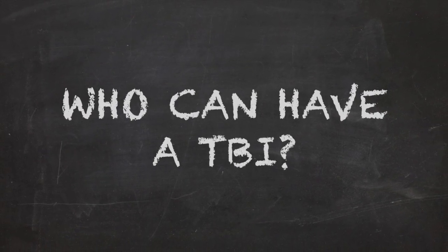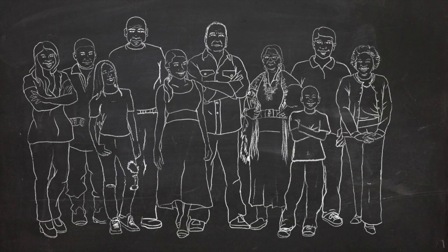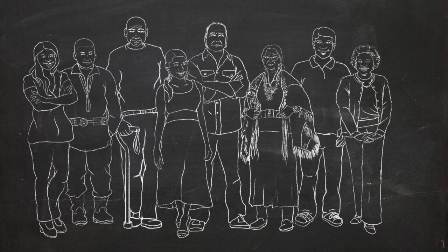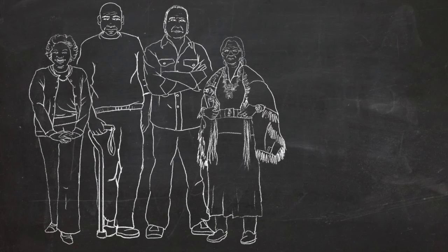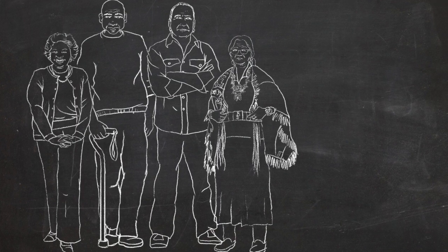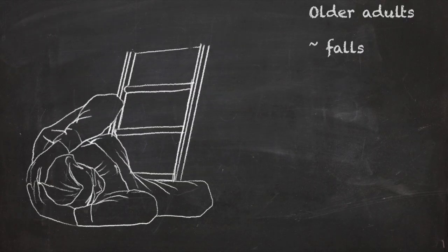So who can have a TBI? Anyone at any age can have a TBI, but for the rest of this video, we will be talking about adults. People over 65 years of age are particularly at risk for TBI. The main cause of those TBIs in older adults is falls.